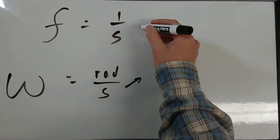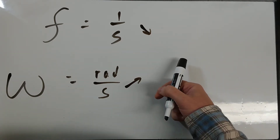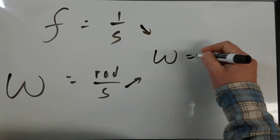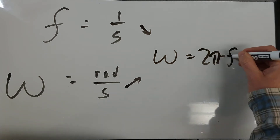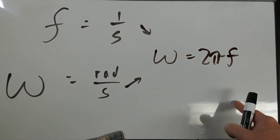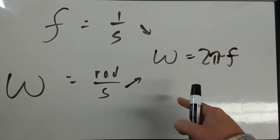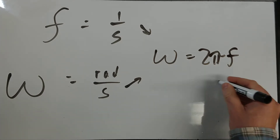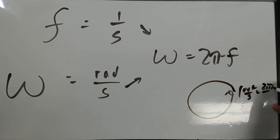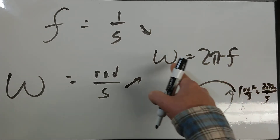So how are these related? There are 2 pi radians per cycle, so if you want to convert from frequency to omega, omega equals 2 pi times f. If it's one rotation per second, that equals 2 pi radians per second. So you just multiply whatever your frequency is in cycles per second times 2 pi, and that converts it to radians per second.